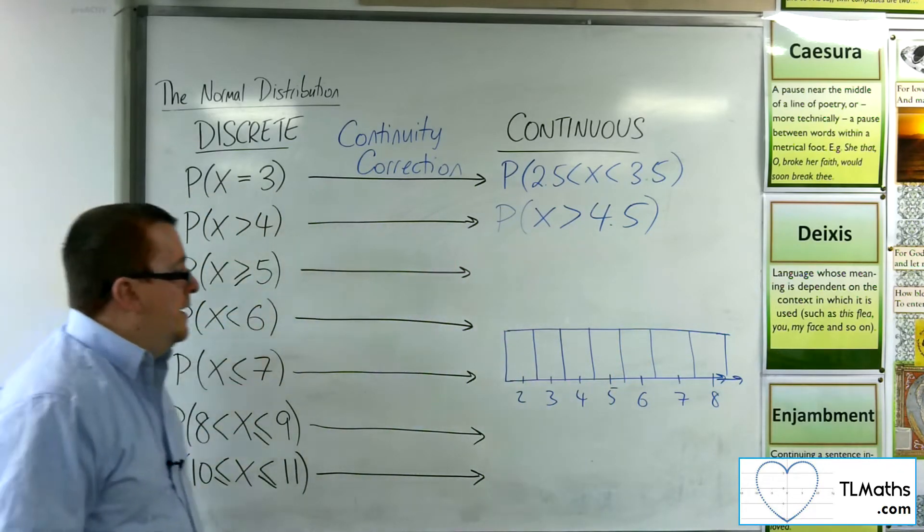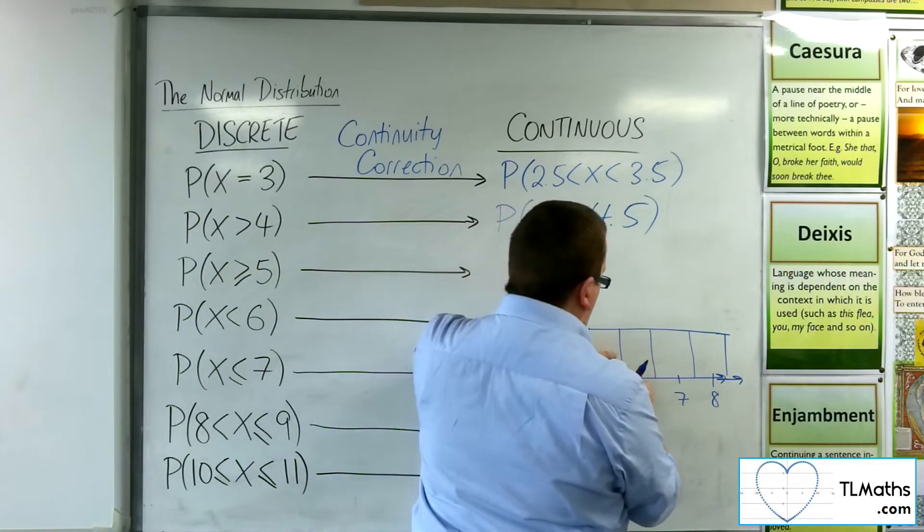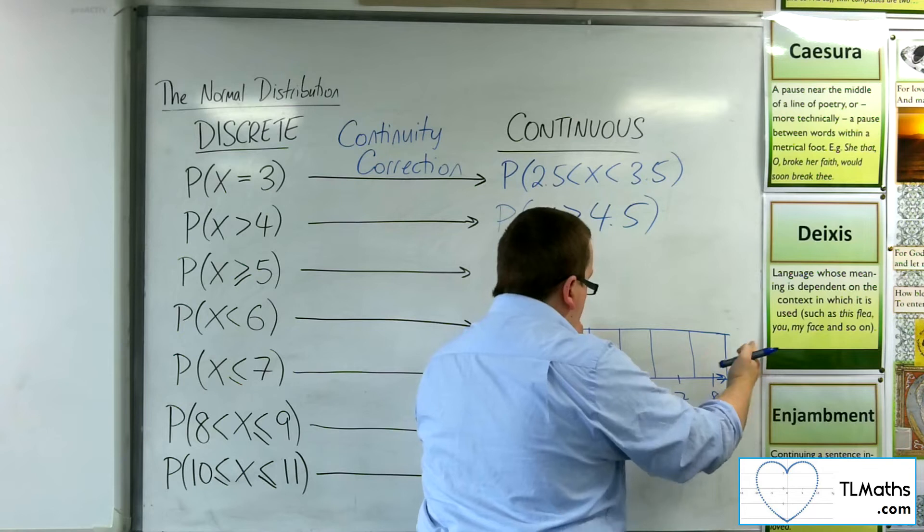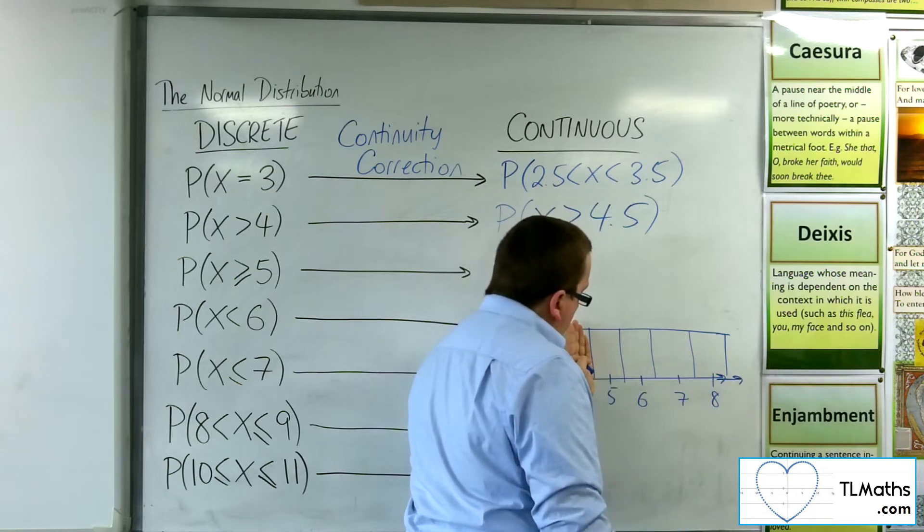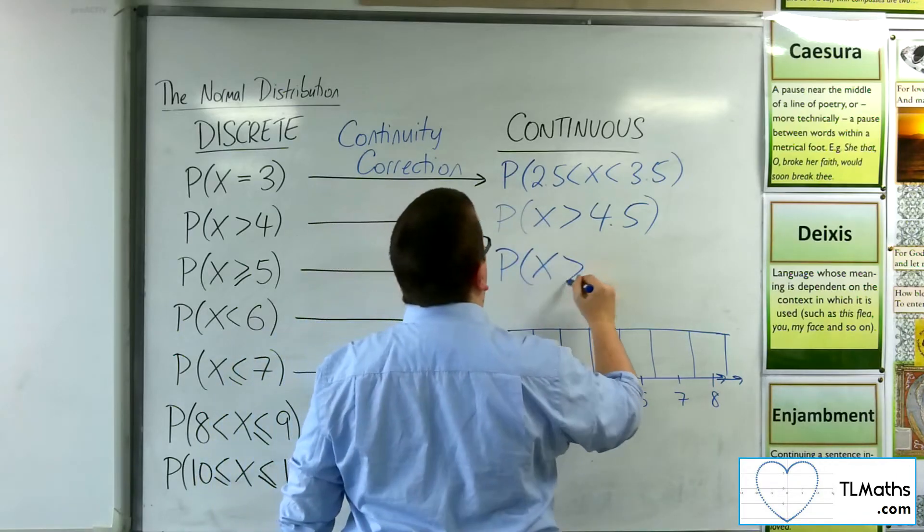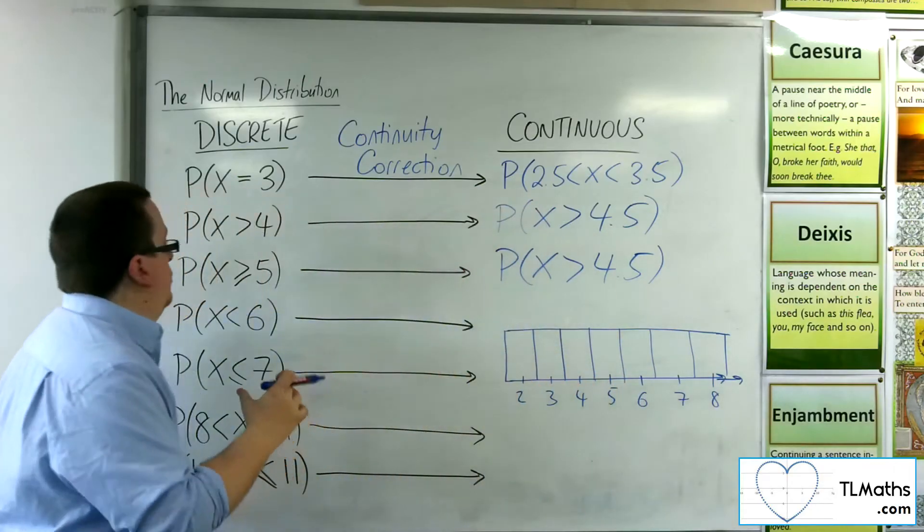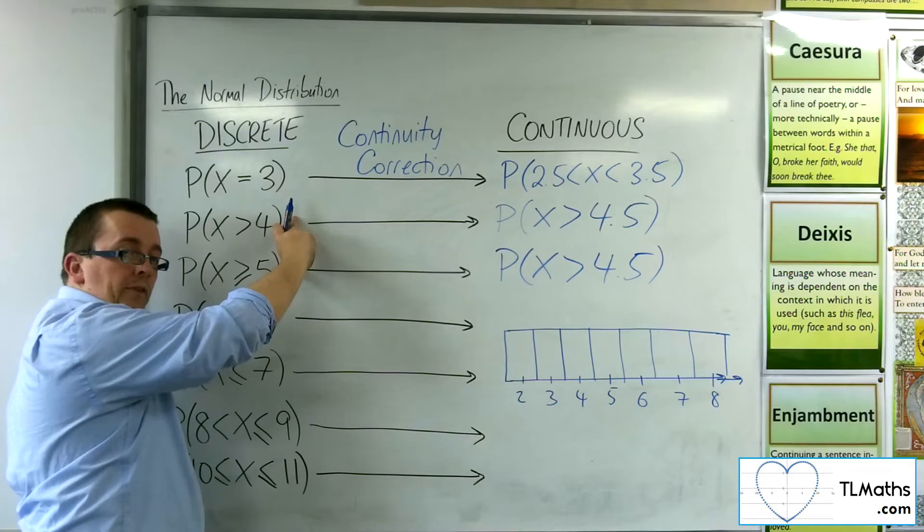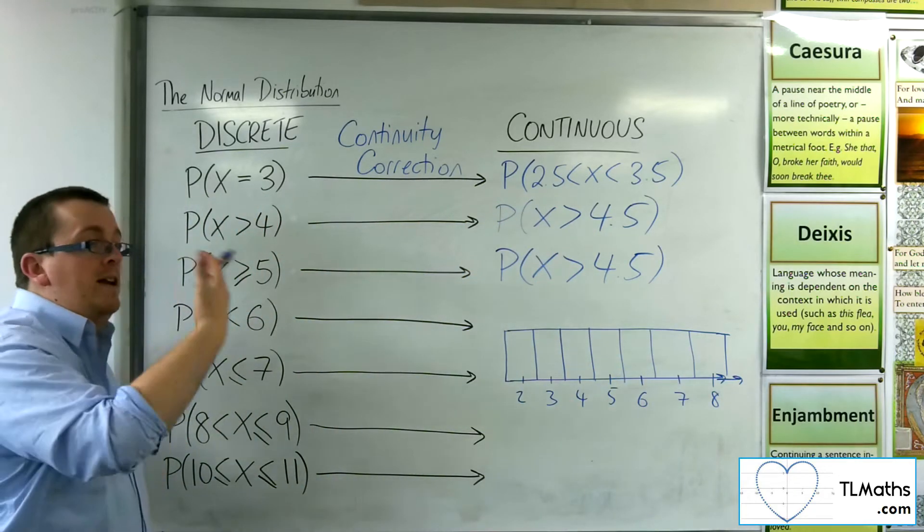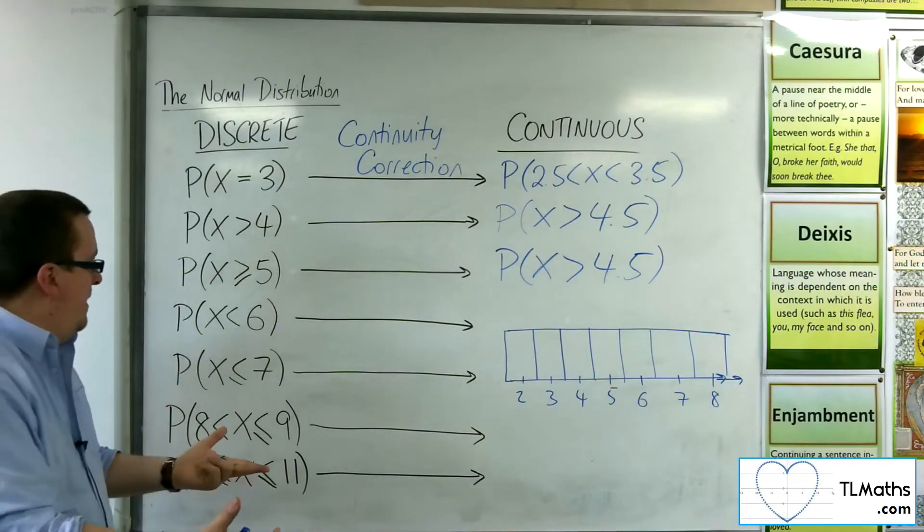For greater than or equal to 5, I want 5 and up. So actually I want from that line there, the 4.5 mark again. So these two are asking for the same thing, because they would be the same thing in binomial terms. So they're the same thing in continuous form. Greater than 4 is 5 or more. I don't mean it to rhyme, but it just did.